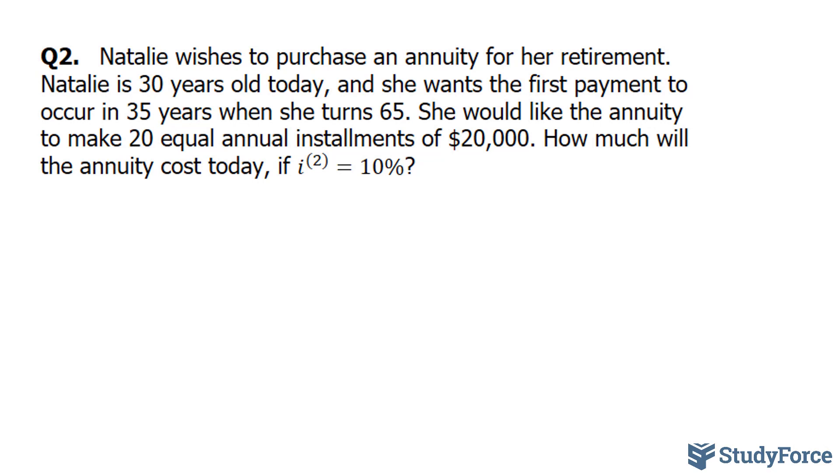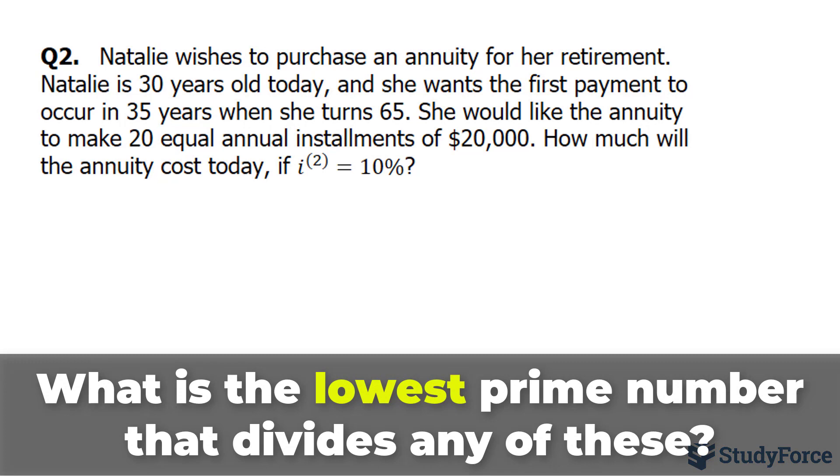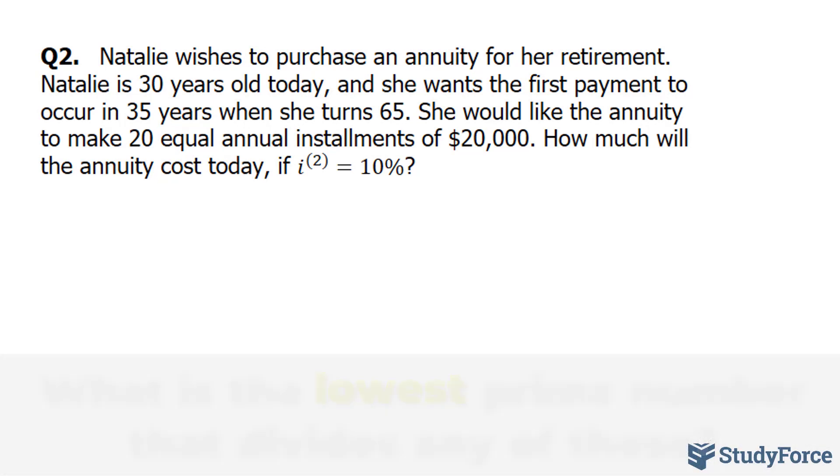So what's happening is that Natalie wishes to have $20,000 paid out to her starting at her 65th birthday for the next 20 years. So she wants this to happen from age 65 to 85. Now in order to make this dream come true, she has to start saving up for this annuity starting today.